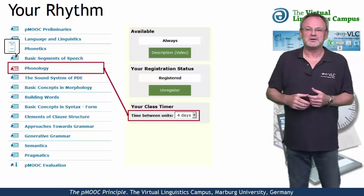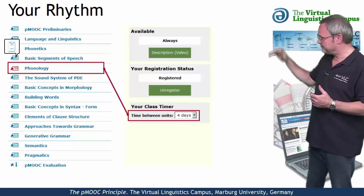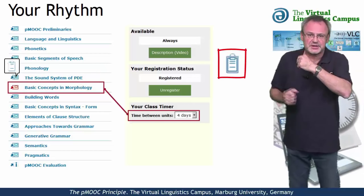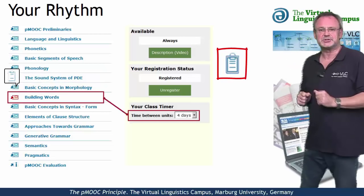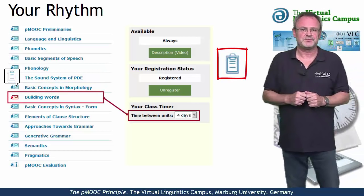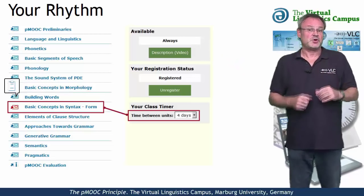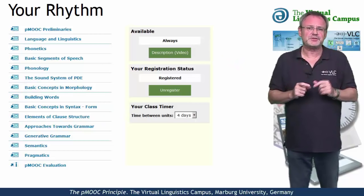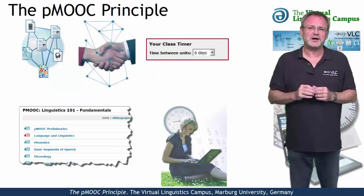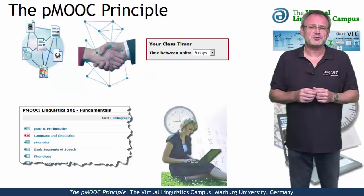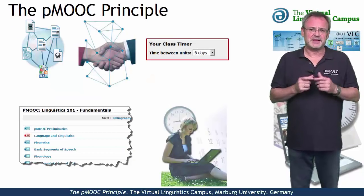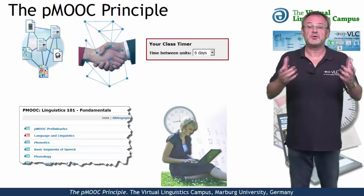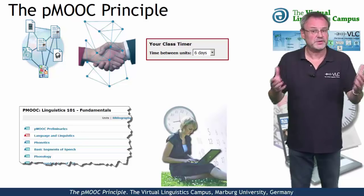It marks the unit you should work with in red and makes available the practical solutions in time. Whenever the red marker moves on, you will see these clickable symbols on the practical sheet. But note that you are free to change your rhythm whenever you like, and you can always override it at any time and access any unit of your choice and the components within it.